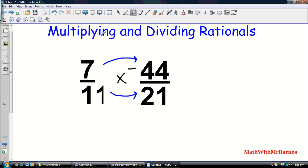However, let's look at this example. 7 times 44, that's not an easy multiplication. 11 times 21, also not an easy multiplication. So there are a couple of things that I taught you guys to be aware of, and that we can make our life easier by trying to reduce or cancel some stuff out.